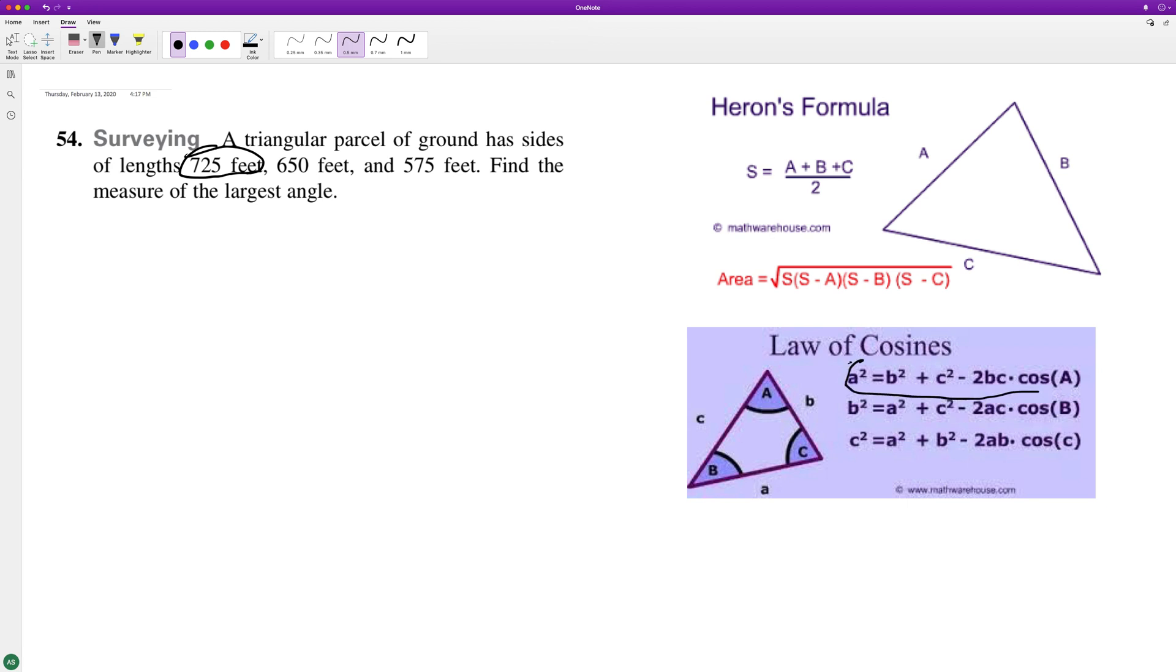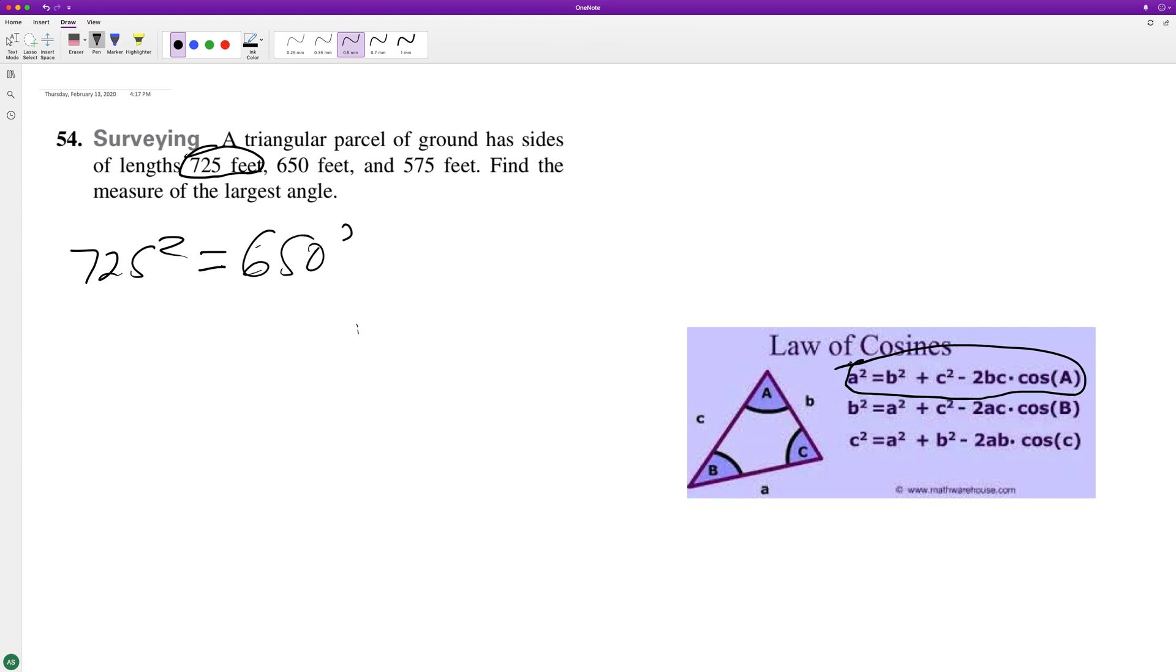We'll go ahead and do this. So we'll have 725 squared - I can delete this - 725 squared is equal to 650 squared plus 575 squared minus 2 times 650 times 575 times the cosine of A.